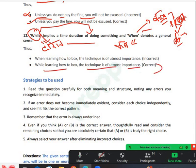During is 'while', when is 'when'. So while learning how to box, the technique is of utmost importance. You need more attention - utmost importance. Clear? Yes sir. Is there any problem with the points we discussed today in the class? No sir. So we will do some practice.